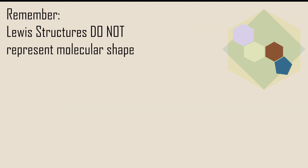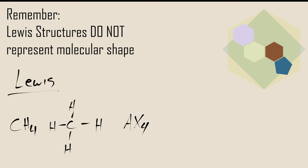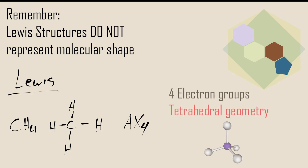Shapes described so far have all been easy to depict in two dimensions, but four electron groups must use three dimensions to achieve maximal separation. This is a critical moment to remember that Lewis structures do not depict molecular shape. Consider the shape of methane, or CH4. In three dimensions, four electron groups can move further apart than the two-dimensional 90 degrees and point to the vertices of a tetrahedron. Methane has a bond angle of 109.5 degrees.